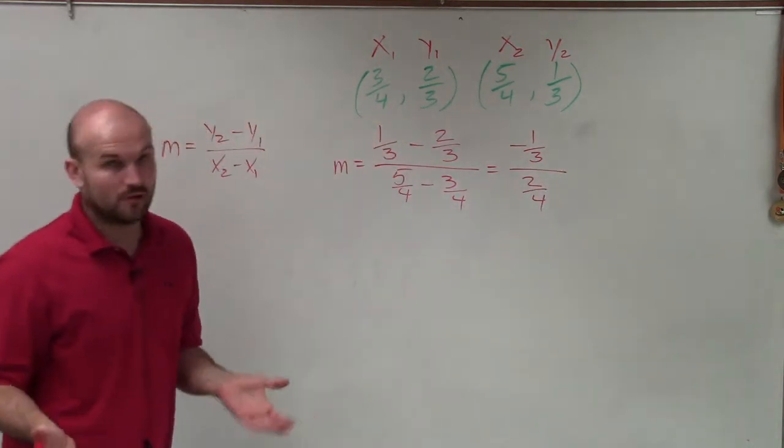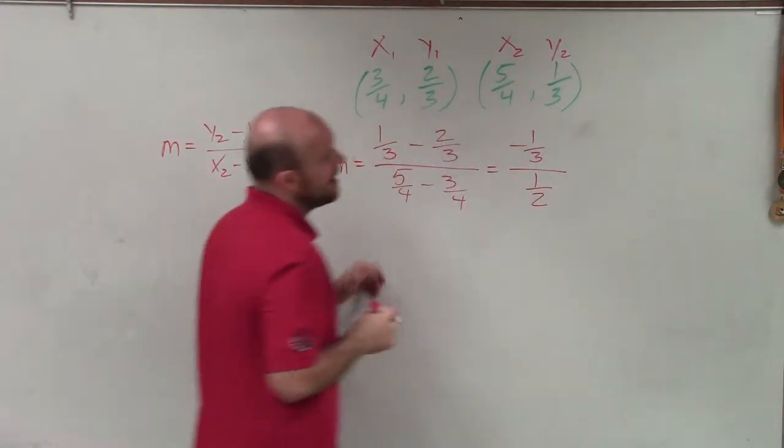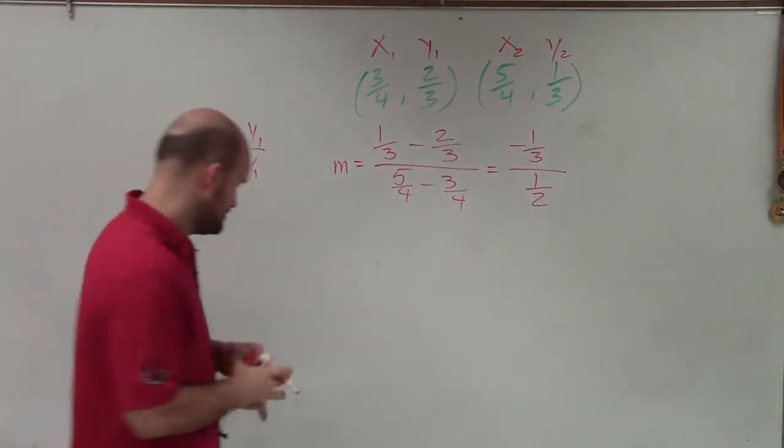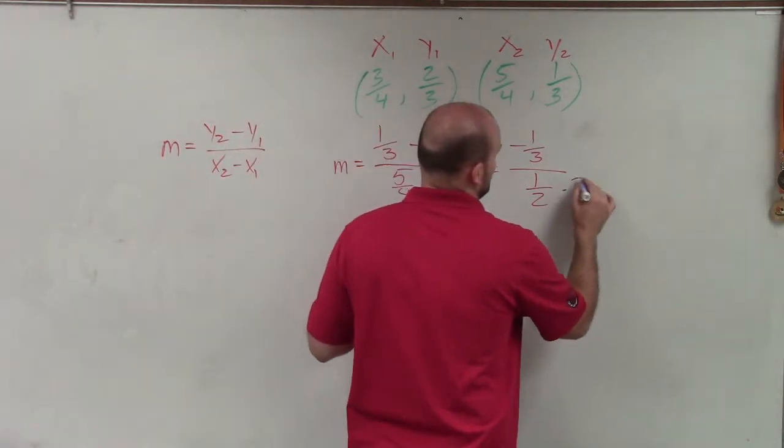Now we can reduce that 2 fourths down to 1 half. Therefore, now I have a fraction divided by another fraction. So to simplify this, all I'm simply going to do is multiply by the reciprocal on the top and the bottom.